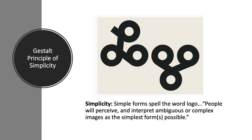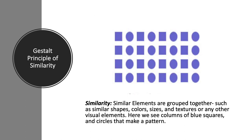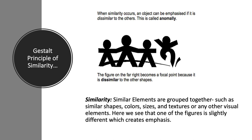Here we have an example of simplicity — the word 'logo' written in a very simple manner with simple shapes and forms. In general, people even when looking at complex images want to recognize the most simple forms to understand what they're looking at. You see this technique used in advertising where they want people to be able to recognize what they're looking at rapidly. In similarity, when you have objects that are similar — like squares and circles in blue — they automatically become a group. These happen to be arranged in a regular pattern, which makes them a group automatically even if they were different colors.